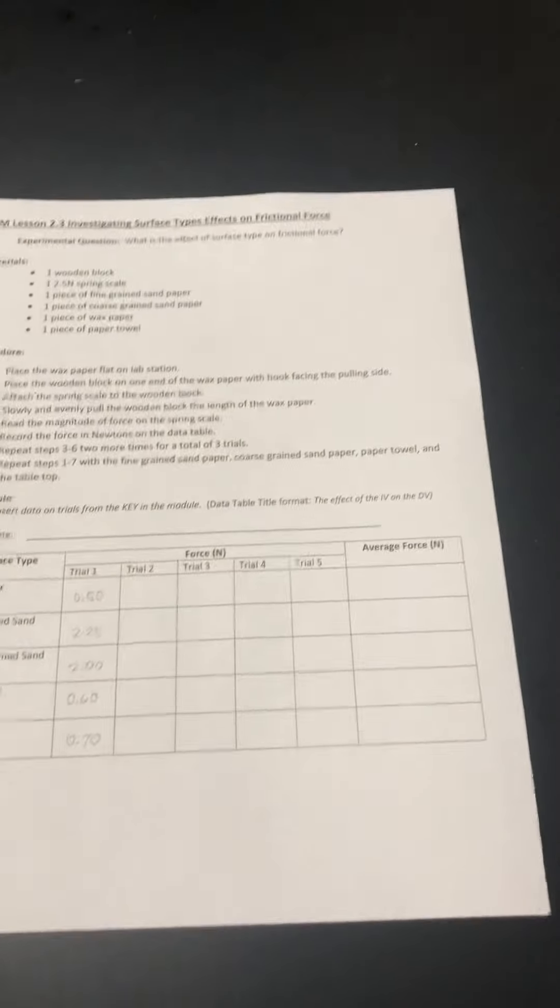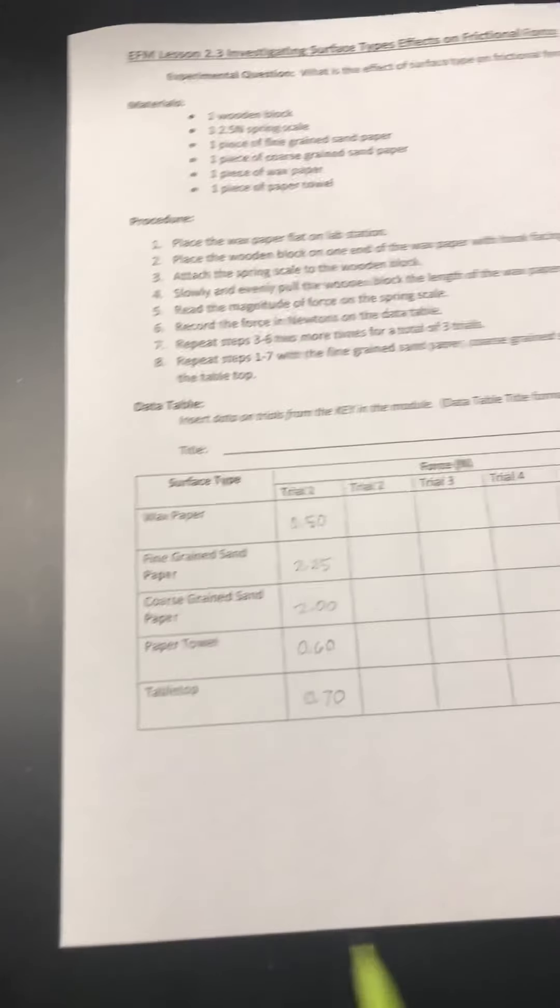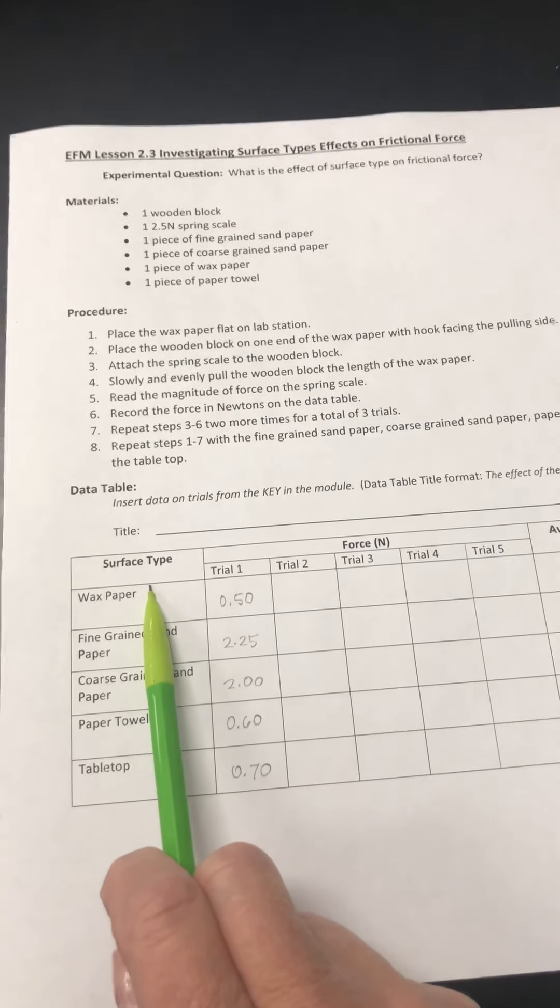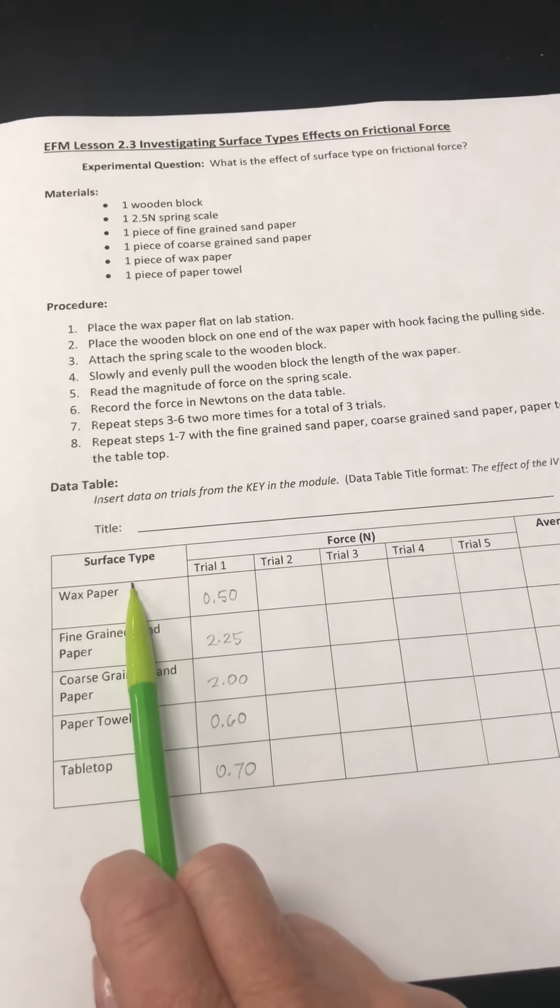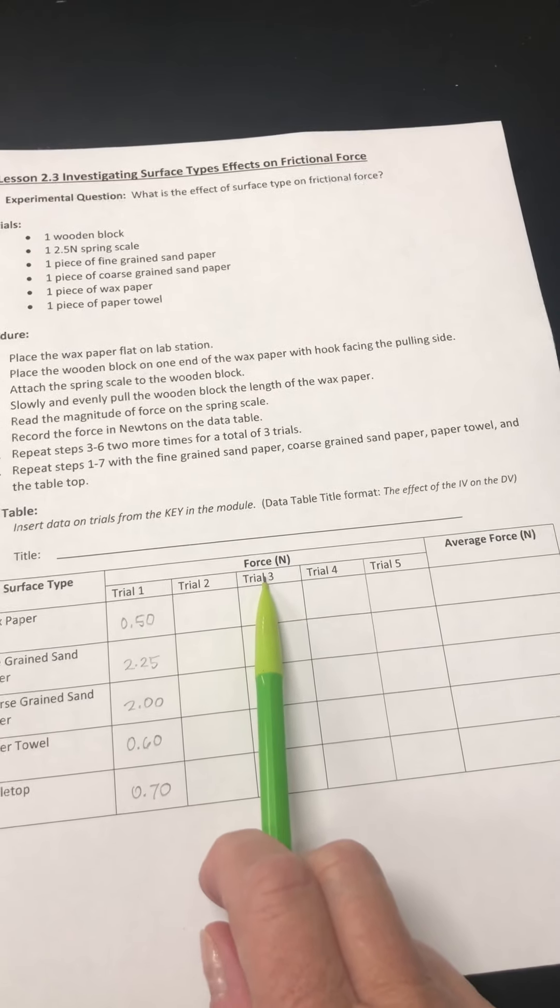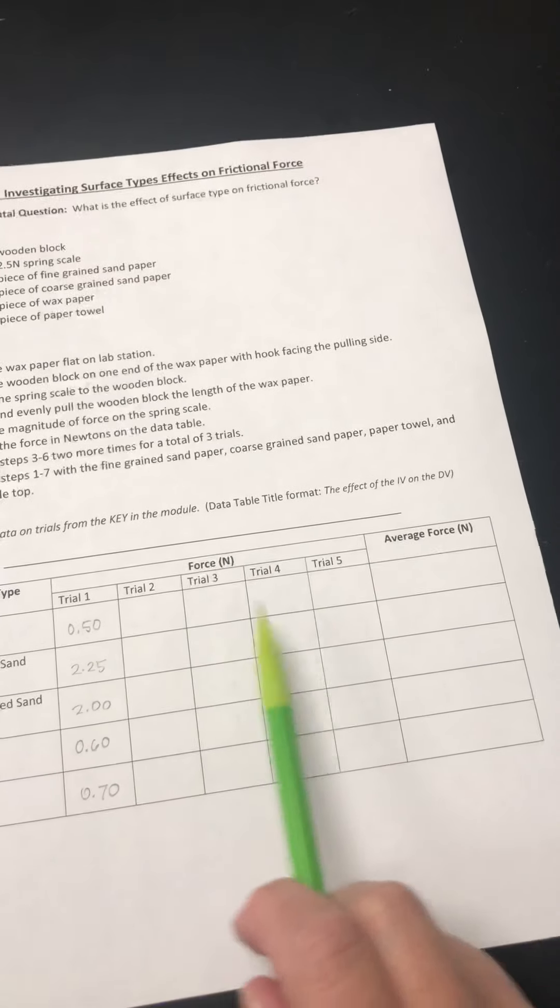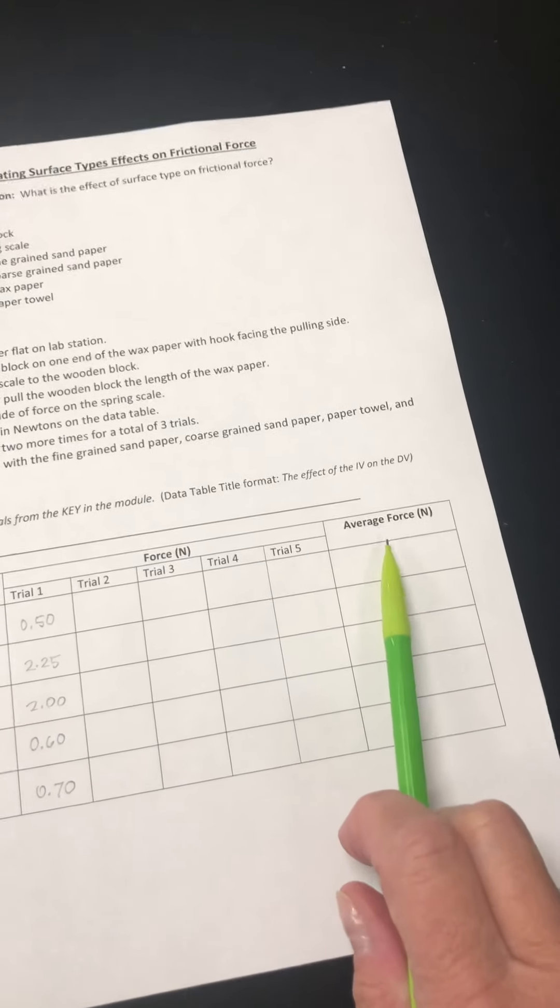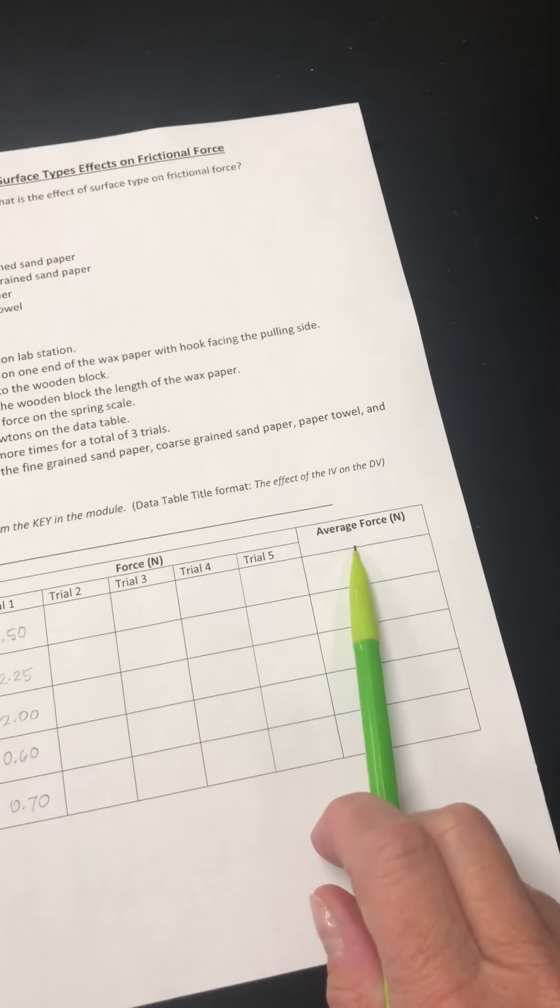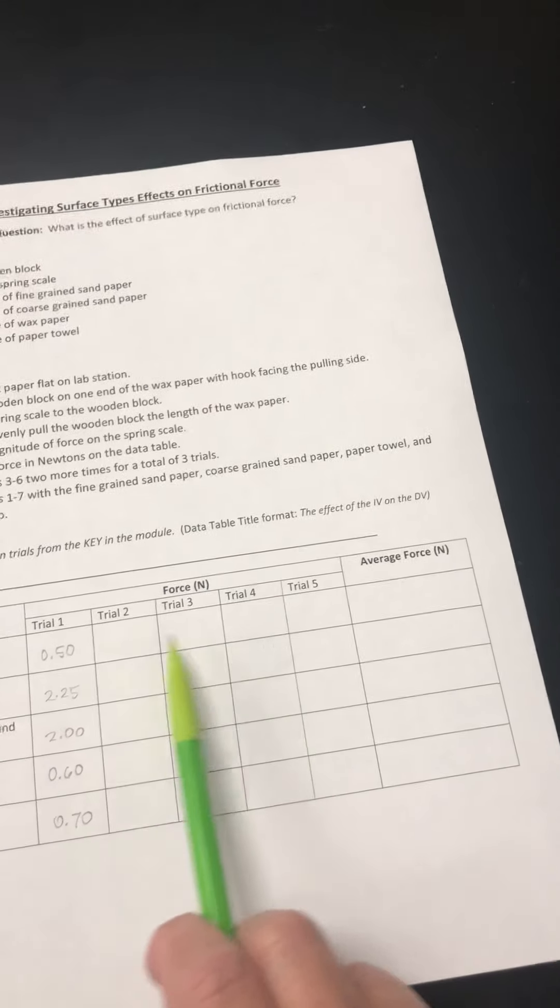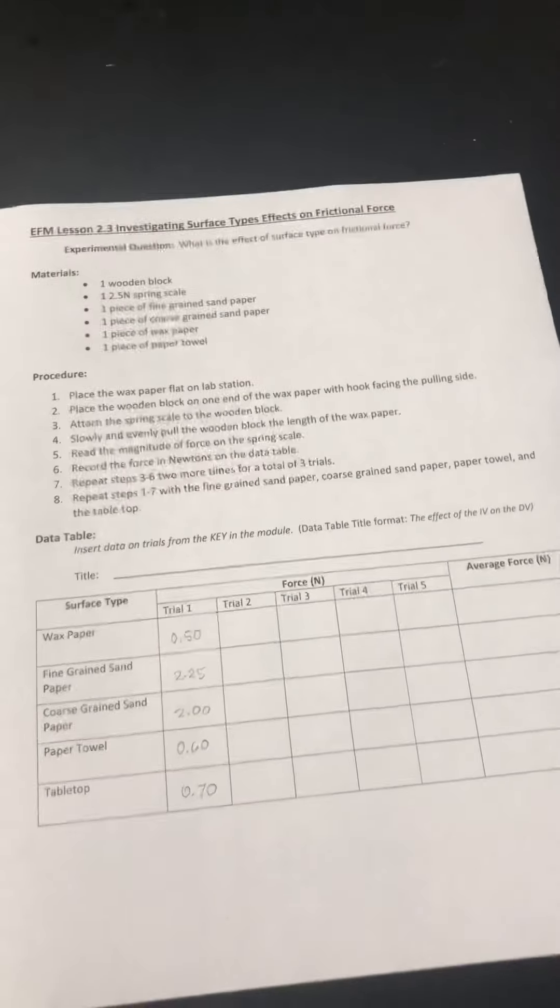And so let's look at our data table here. You can see that we've got the independent variable. That will be the thing that we are changing in the experiment, the surface type. We're measuring the force, so that is our dependent variable. And then we'll have our repeated trials which you will average here. The derived quantity, remember the thing that we calculate, will be average force in Newtons. So you'll come up with your averages based on the raw data that you will find in the module.